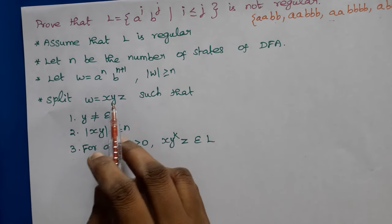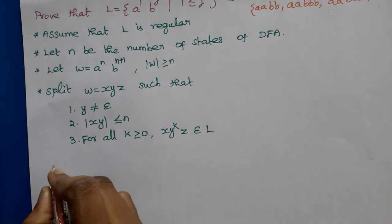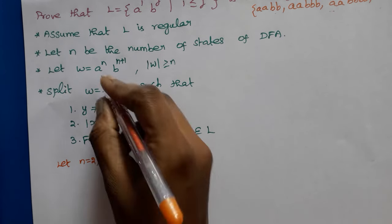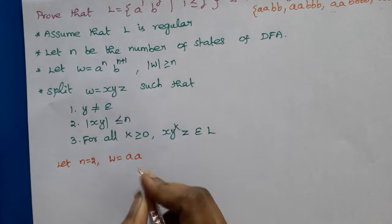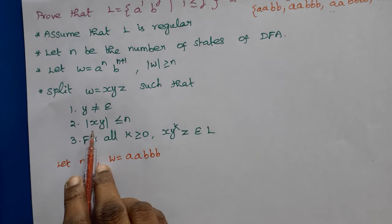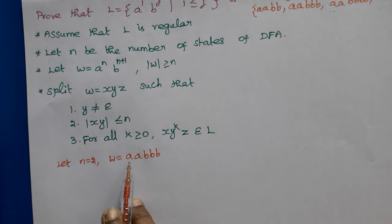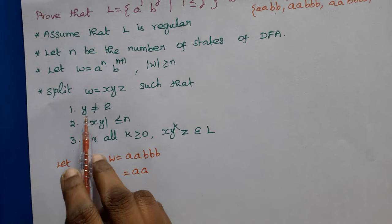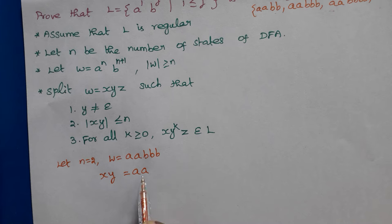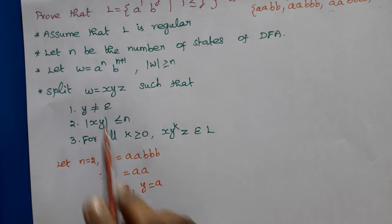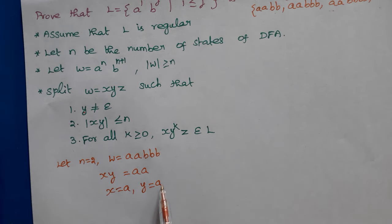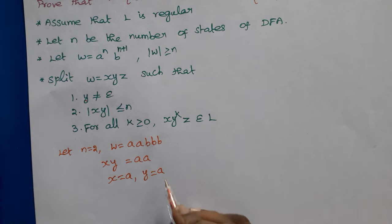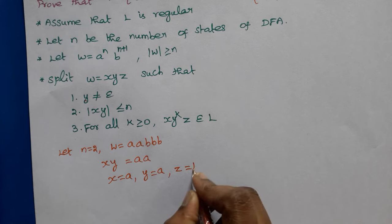Now we apply the contradiction method. Assume N = 2. Then W = 'aabbb'. By the second rule, length of XY is less than or equal to N, so |XY| = 2, meaning XY = 'aa'. By rule 1, Y is not equal to epsilon, so Y must have at least one symbol. Therefore Y = 'A' and X = 'A'. Z is the remaining part of W, so Z = 'bbb'.